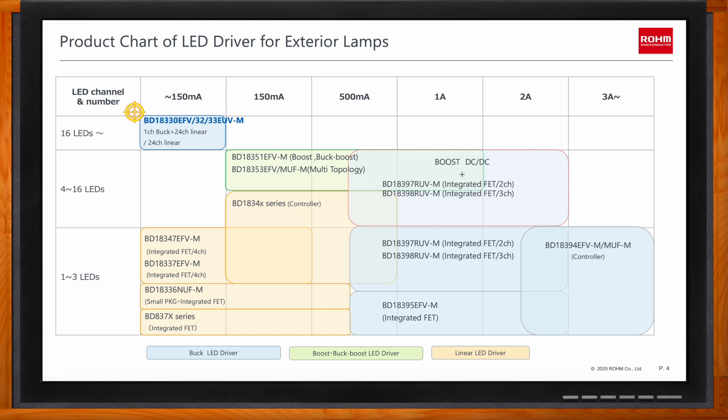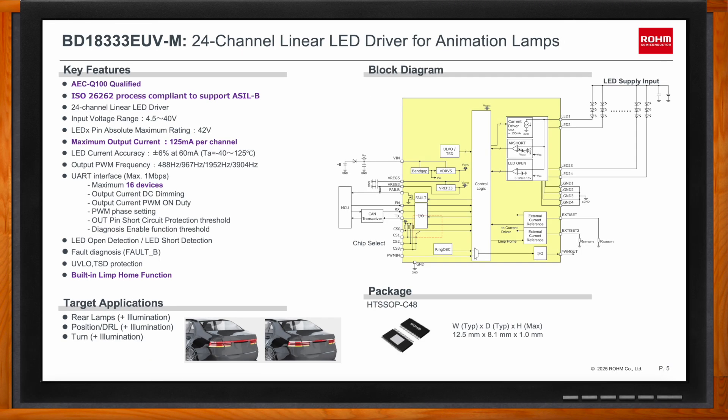Can we take a closer look at the BD18333 and what kind of specifications we're talking about? The BD18333 is a 24-channel current sink and features individual dimming control for each channel — either DC dimming or PWM dimming. Each channel is rated up to 125 milliamps based on the internal capability of the FET. You can even combine channels if you need higher current; for example, tying two channels together gives a maximum rating of 250 milliamps string current.